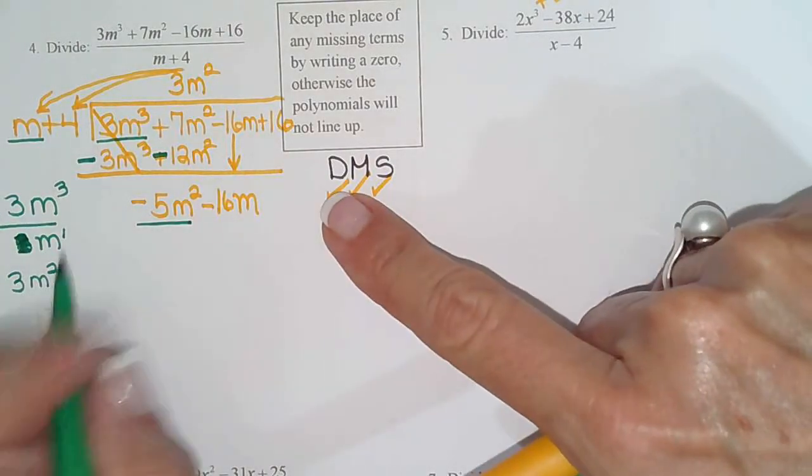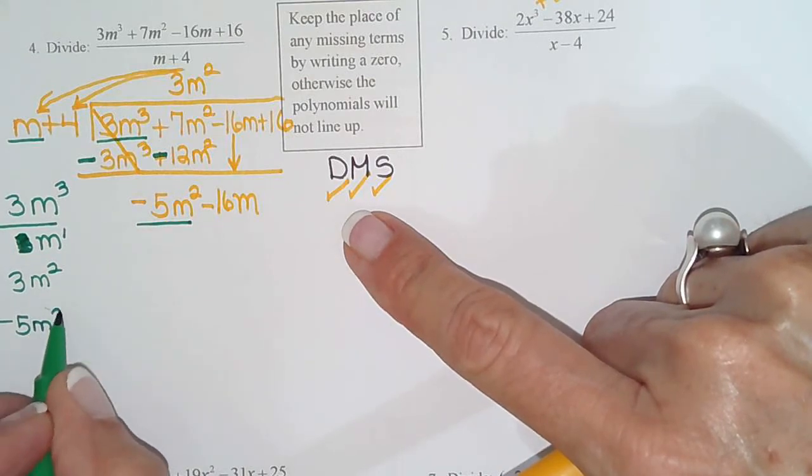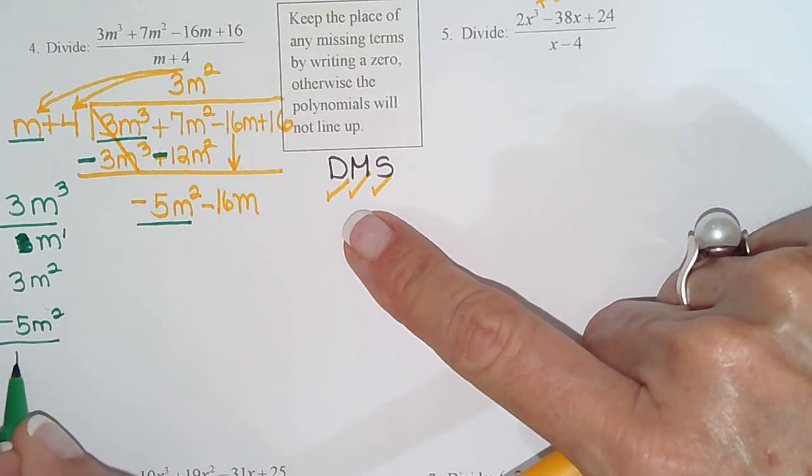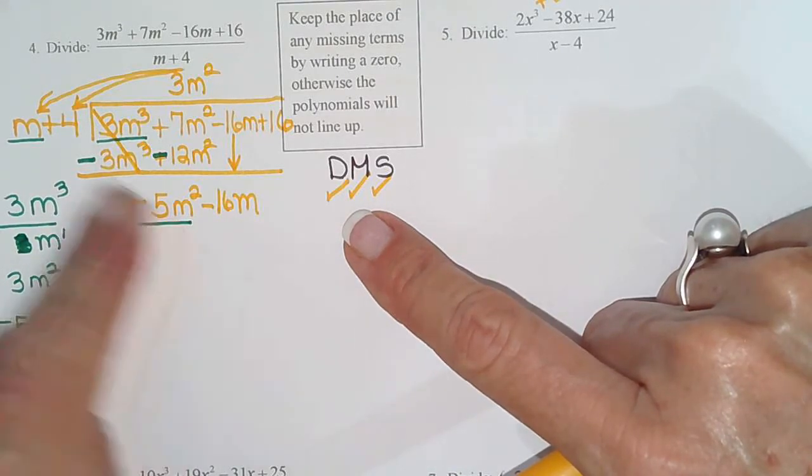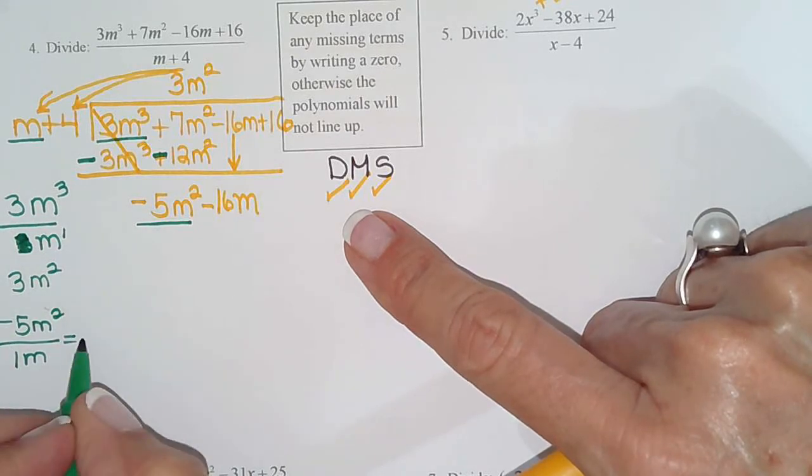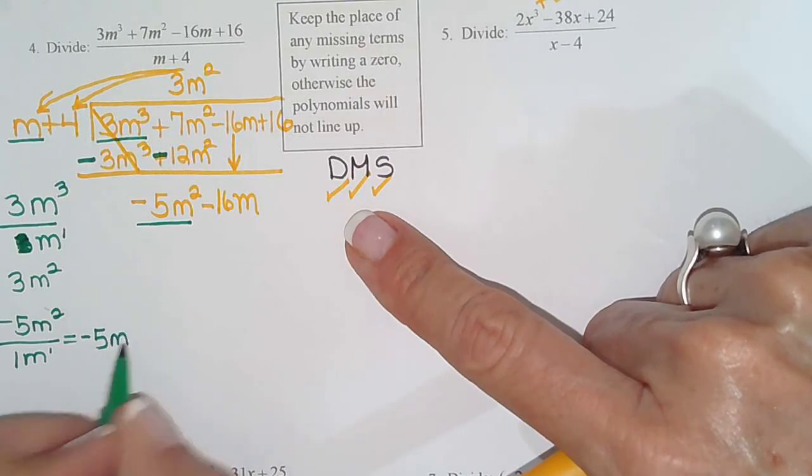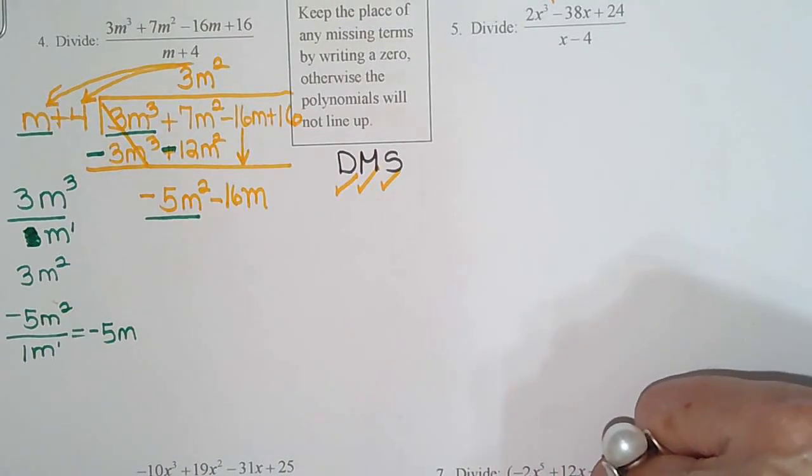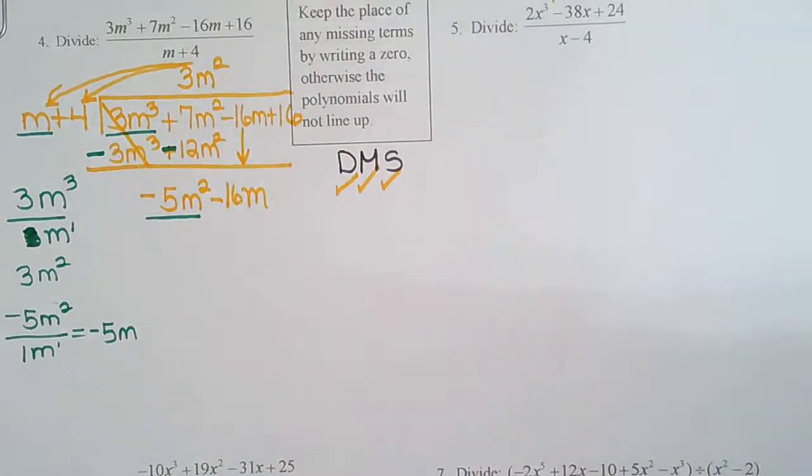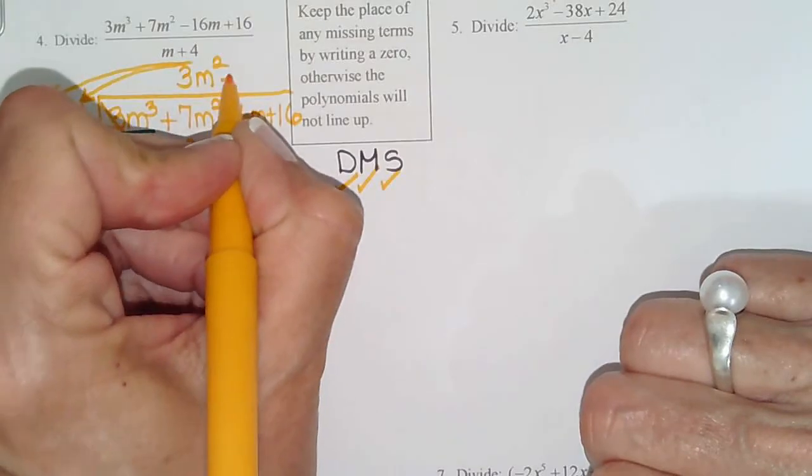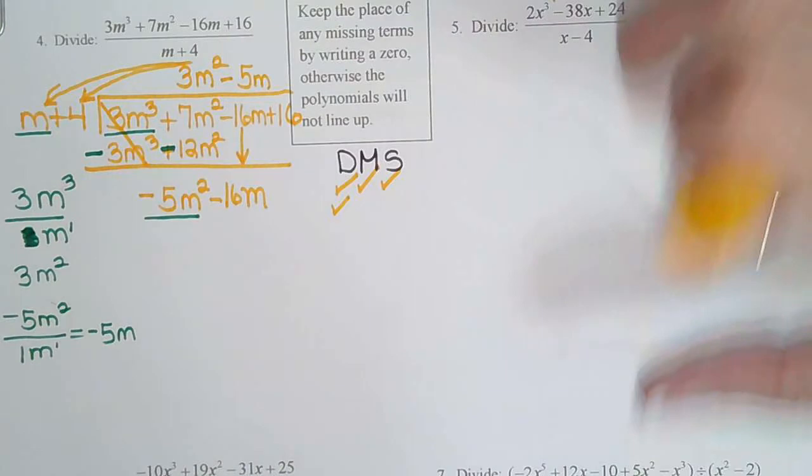So I'm back to division. So it's the front term divided by the front term. And if you want to call that 1m, you can. That might help you. So negative 5m squared divided by 1m. So negative 5 divided by 1 is negative 5. 2 minus 1 is m to the first. So that's my second quotient. And it goes above my m term. So here's my m term. So I'm going to write negative 5m. So division's done for the second time.